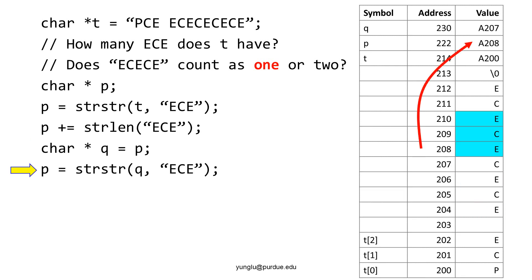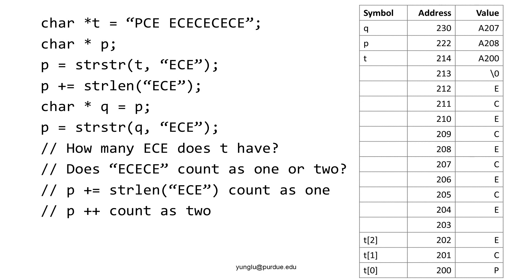What should we do if we want to count ECECE as only 1 ECE? We need to move p far enough so that it moves beyond the entire ECE in the first occurrence. To do so, we will use p plus the length of ECE. This will add 3 to p and the next ECE will be searched from address 207, not 205. If we search from address 207, the ECE starting at address 206 will not be counted. This slide summarizes the two different methods. If we want ECECE to be counted as 2 ECE, then p's value increments by only 1. If we want ECECE to be counted as only 1 ECE, then p's value increments by the length of ECE.